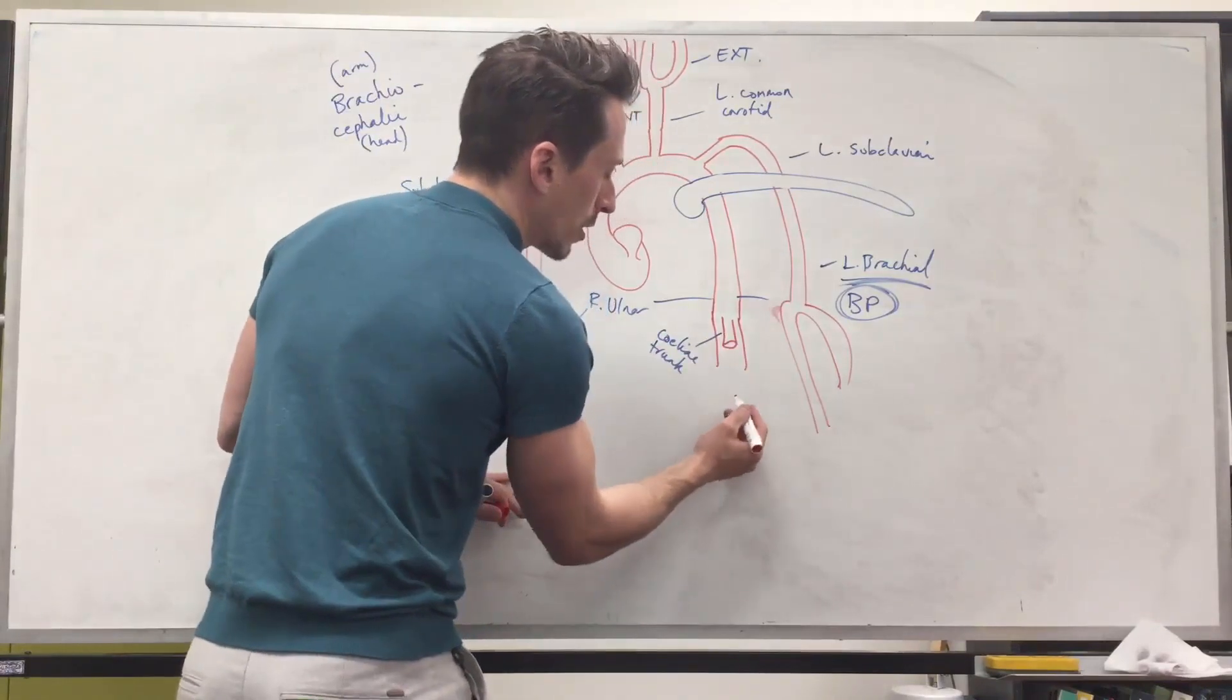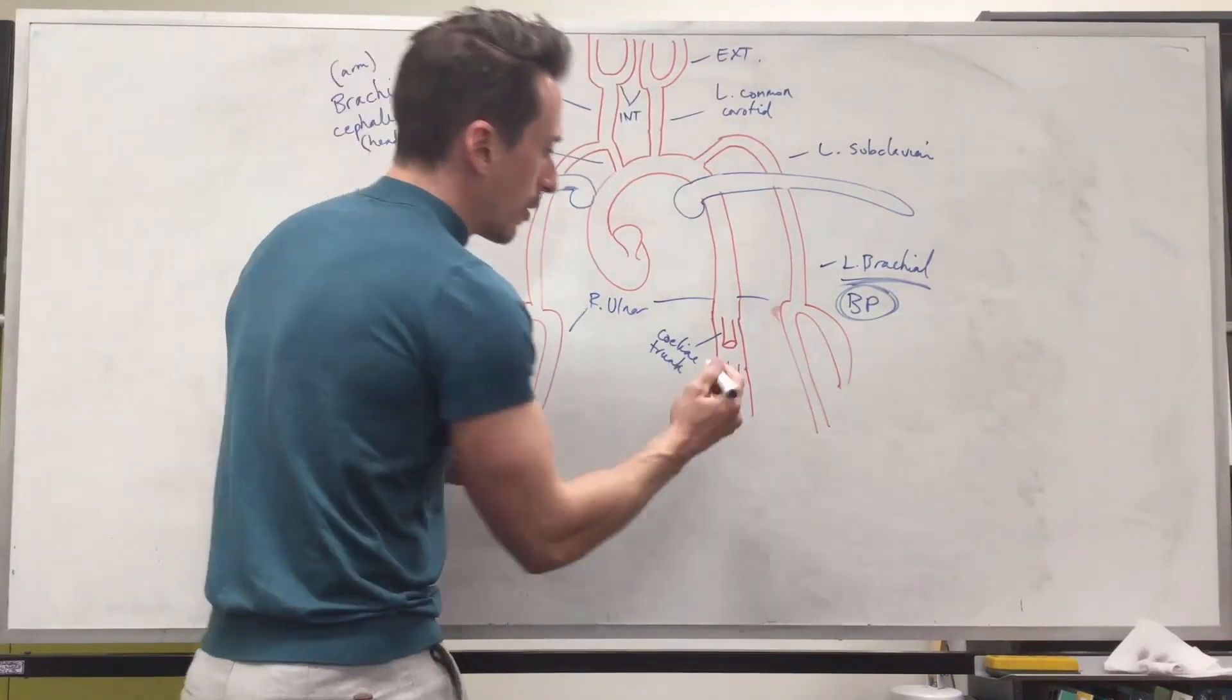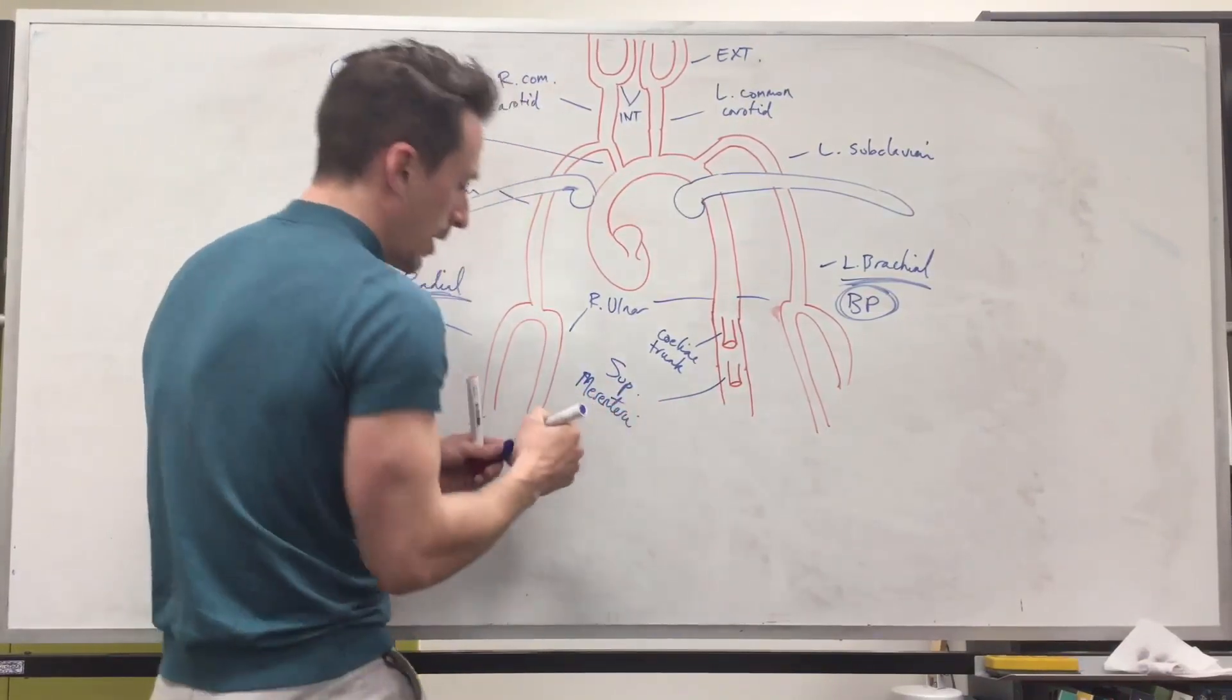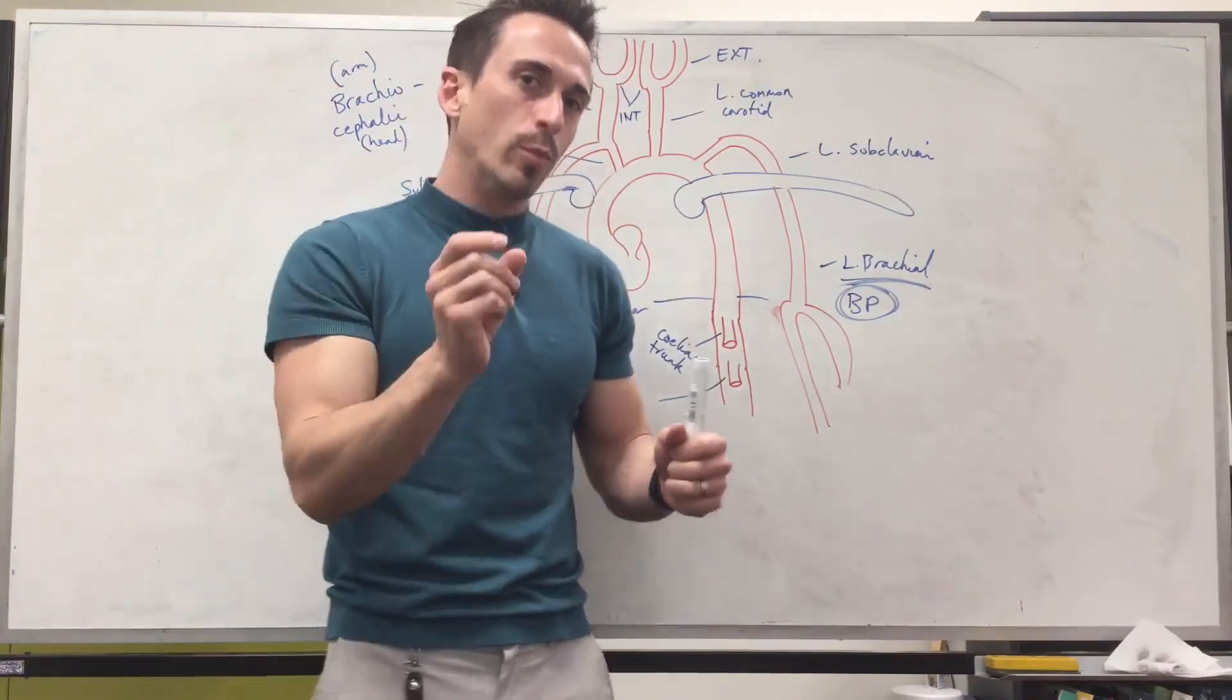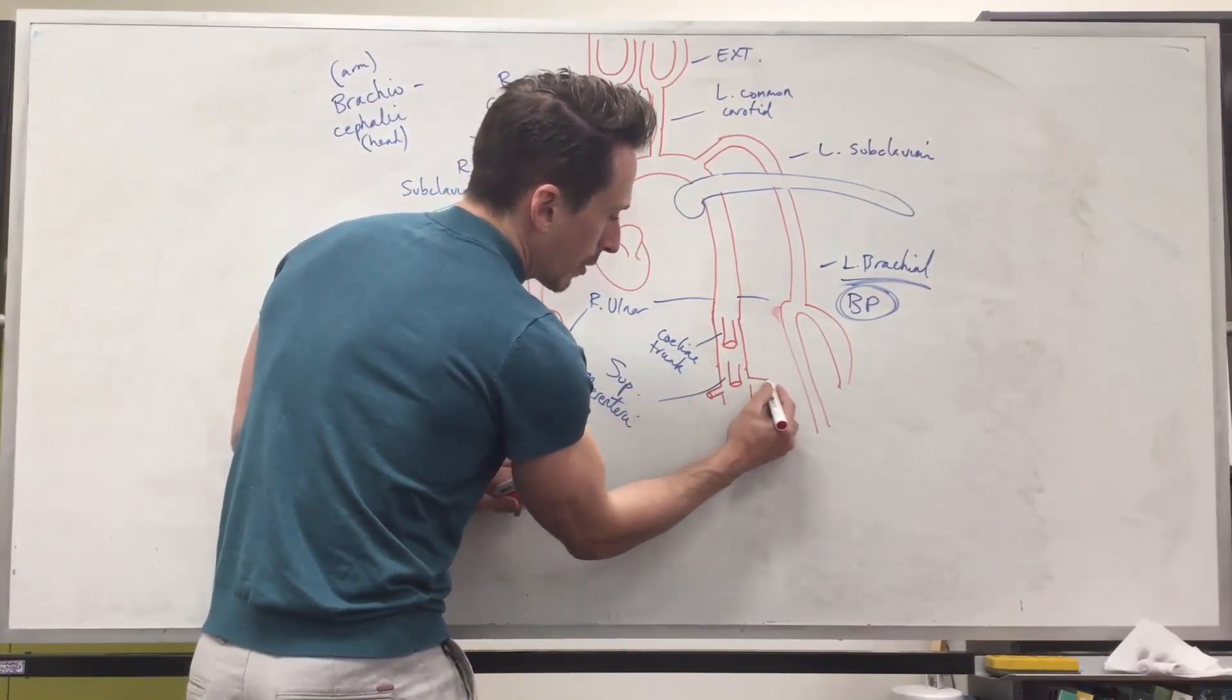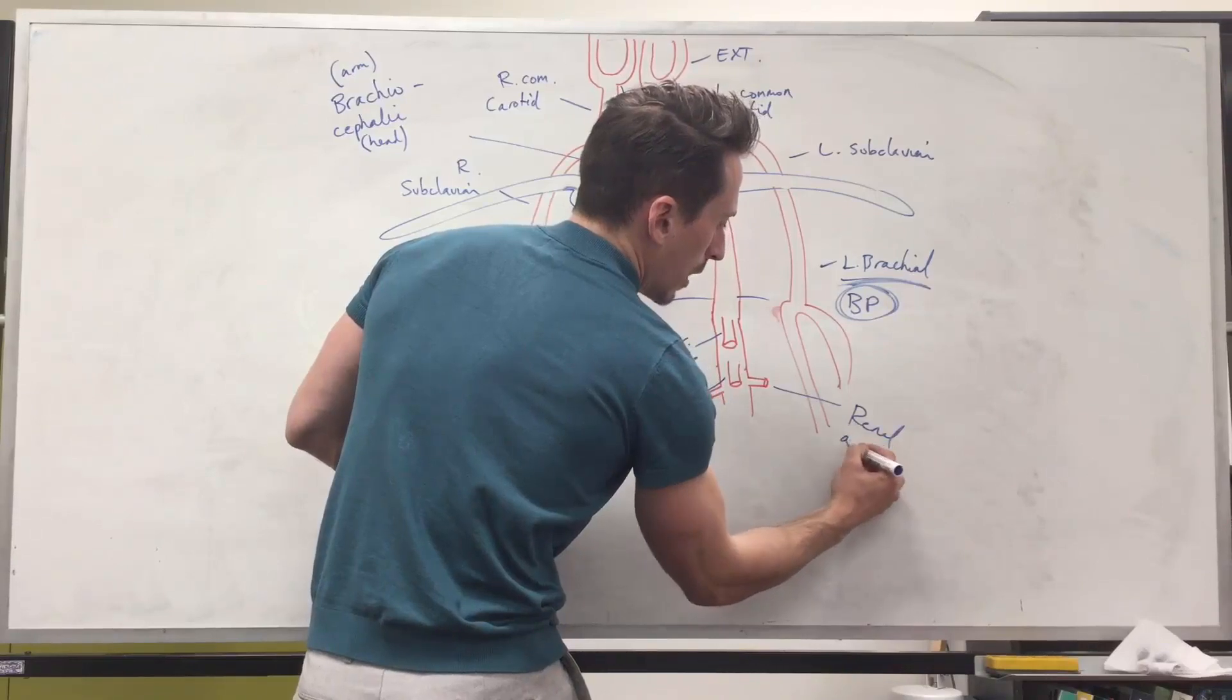Now below the celiac trunk, we've got another branch called the superior mesenteric that comes off and the superior mesenteric artery that's going to give blood to most of the small intestines and a little bit of the large intestines. Now basically nearly either side of this you're going to have a paired artery coming out and that's going to be the renal artery that's going to give blood flow to the kidneys, the paired renal arteries.